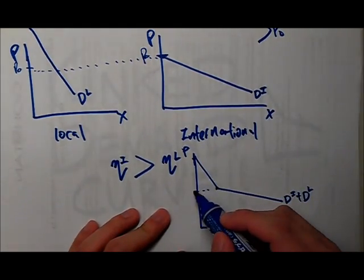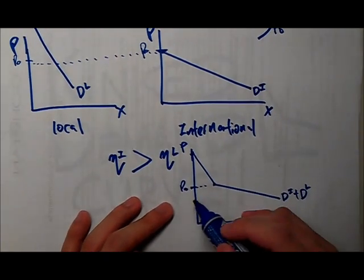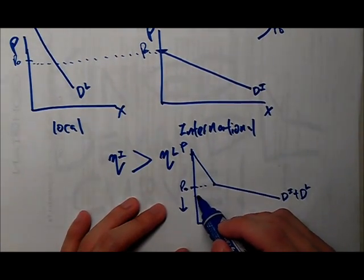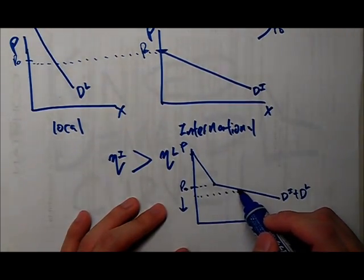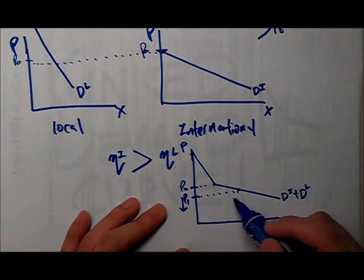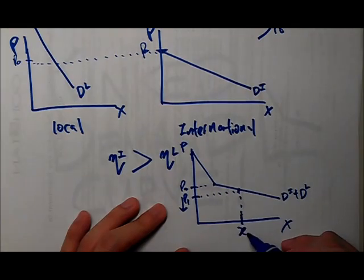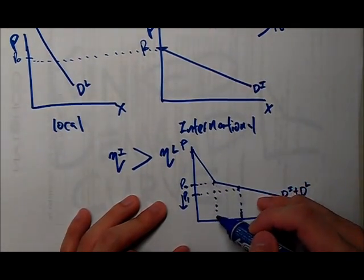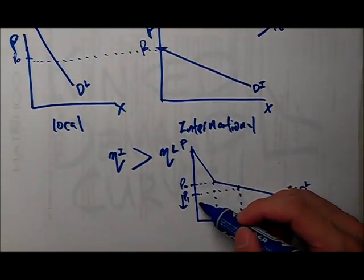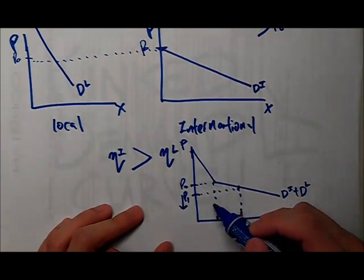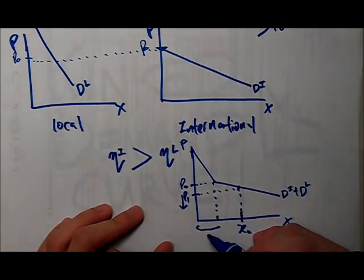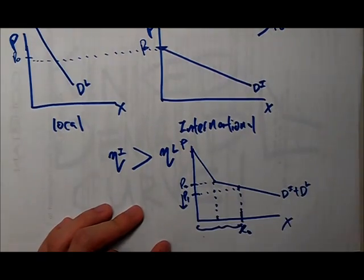Basically what's happening here, if the price is below P0, what we are doing is that we are supplying, for example, at P1. We are supplying in this portion over here. We call this X0 first. If you divide this into two, this portion over here is actually for the local demand. And here are all exports.